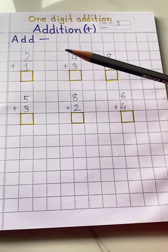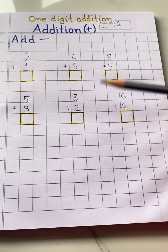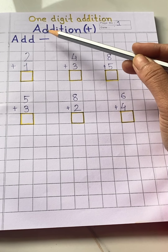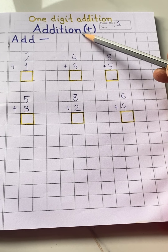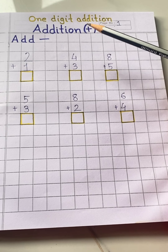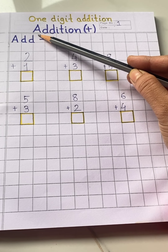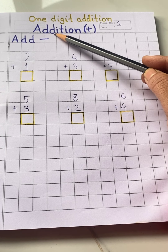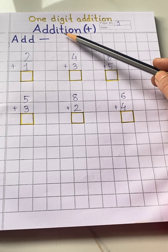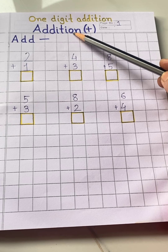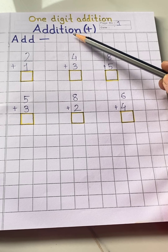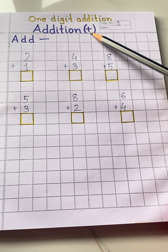Take out your maths classwork notebook and write 'addition.' Children, what is the spelling of addition? A-D-D-I-T-I-O-N — addition. And this is the plus sign.